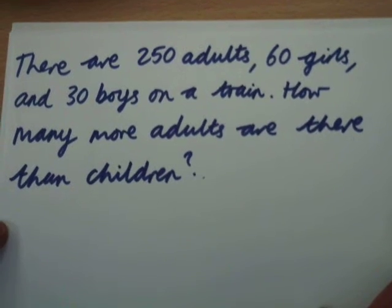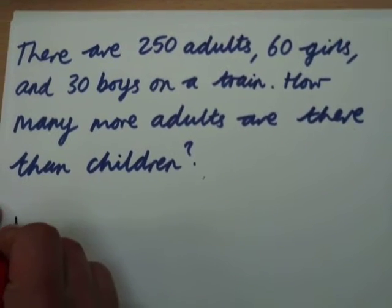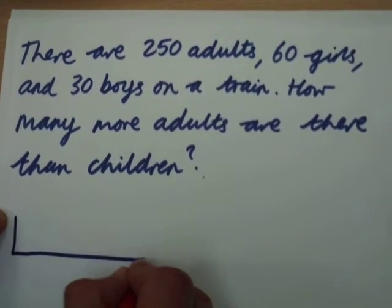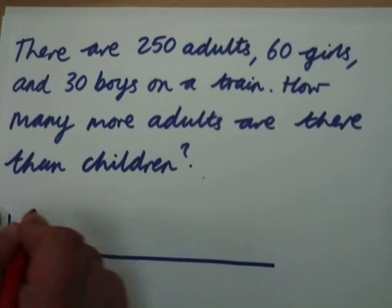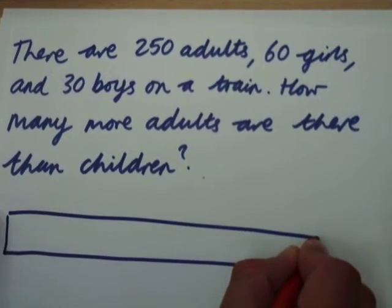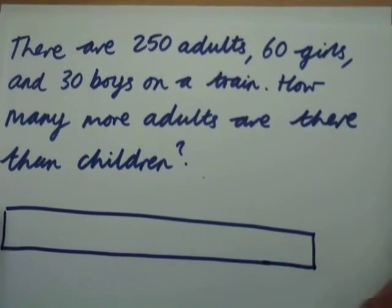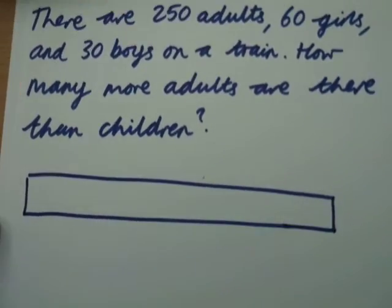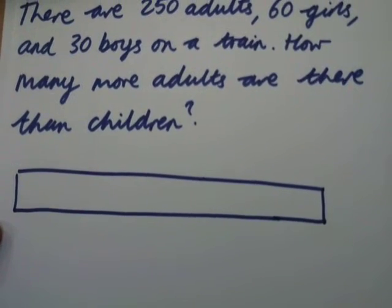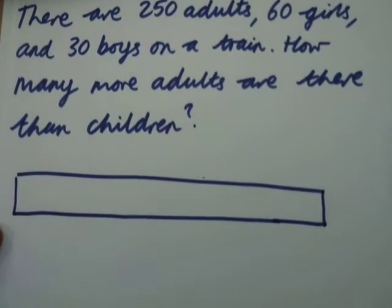So what I'm going to start with is I'm going to draw a bar which is just a visual representation of what we know in this word problem. Sometimes we find that children don't really know where to start when looking at written word problems like this one.